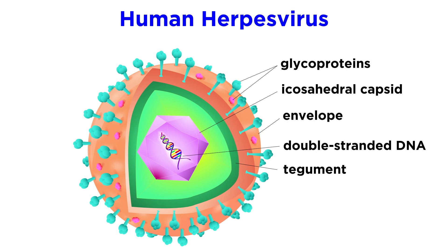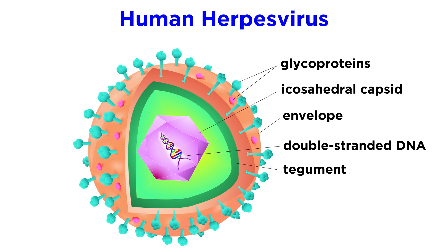Herpes simplex viruses fall into the group of human herpes viruses, which are large enveloped viruses that contain double-stranded DNA. The DNA-based core of these viruses is surrounded by an icosahedral capsid structure. Capsids, in general, are assembled from individual proteins that gather together in an organized structure to protect the genetic material of the virus. In an icosahedral capsid structure, proteins gather into an approximation of a sphere, but made up of many symmetrical subunits.